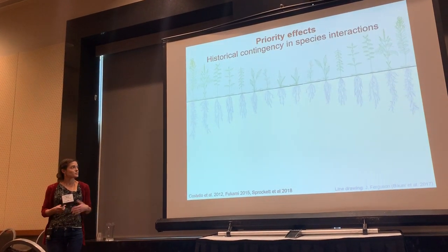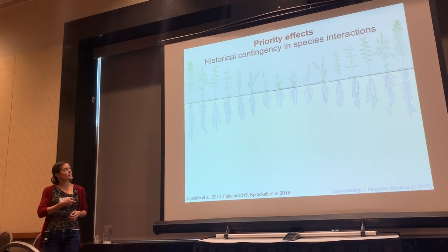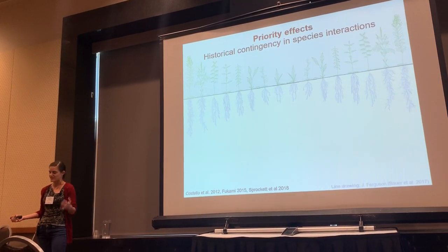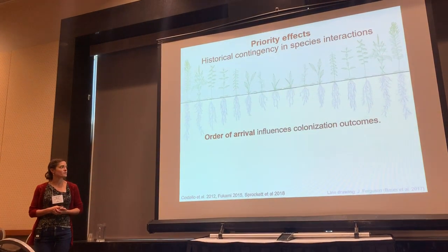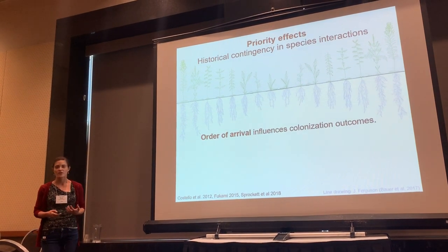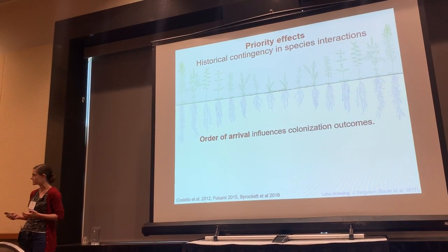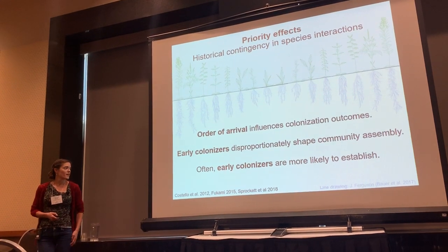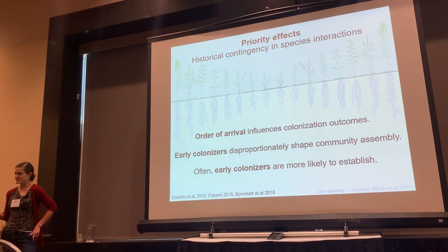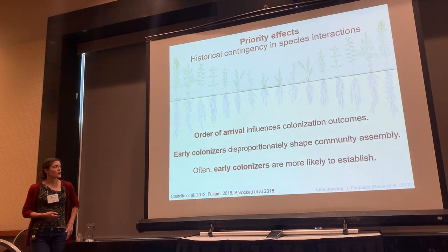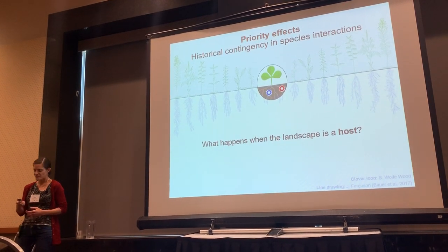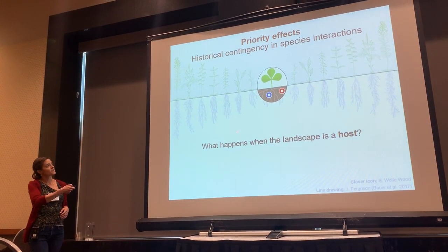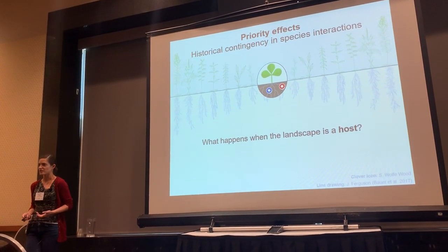We tend to think of priority effects as playing out against an abiotic landscape background — for example, how historical contingency determines how a plant community assembles. Priority effects simply predicts that the order of arrival influences colonization outcomes. Studies of priority effects tend to find two broad patterns: first, early colonizers disproportionately shape community assembly; and second, early colonizers are often just more likely to establish because they get an early toehold in these environments. But because I study interactions between hosts, mutualists, and parasites, I'm particularly interested in how these processes might play out in the landscape of the host — when the arriving organisms are microbes colonizing a larger macroorganism.